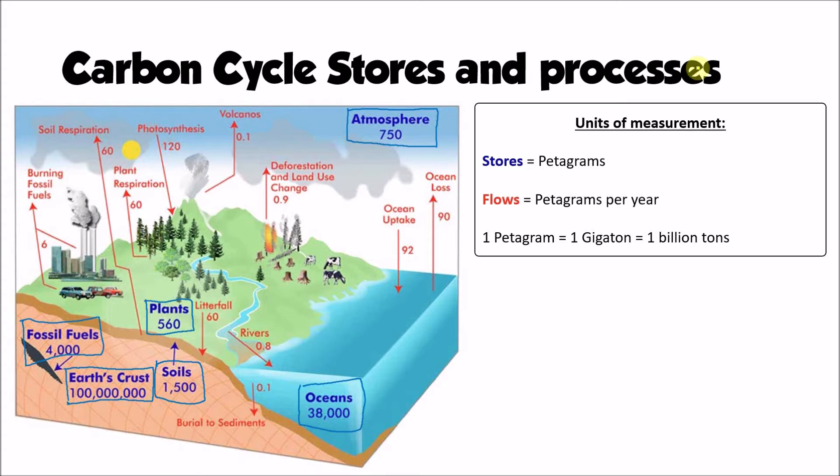If we now turn our attention to the flows of carbon moving material between those stores, we can see that there are some quite important processes taking place. Probably one of the most important and most obvious one of those is photosynthesis. You can see that happening in here, absorbing around about 120 petagrams of carbon every year. So around 120 billion tons of carbon is absorbed by photosynthesis.